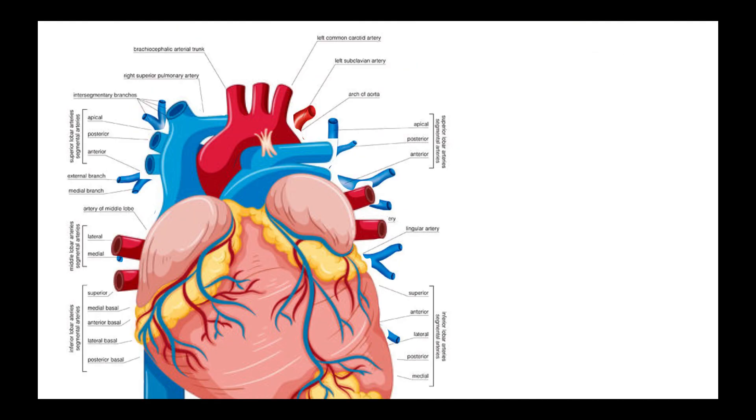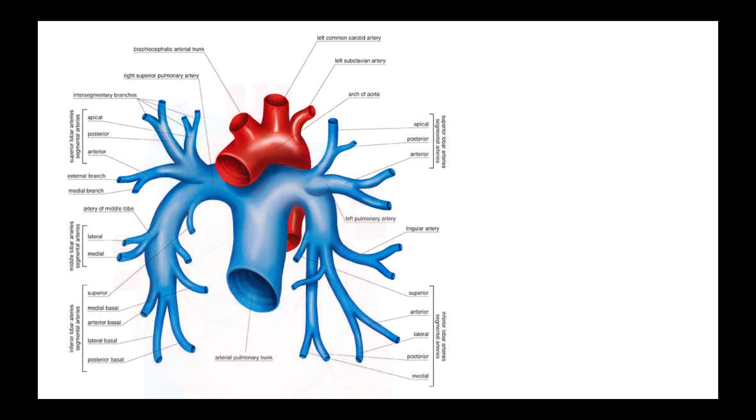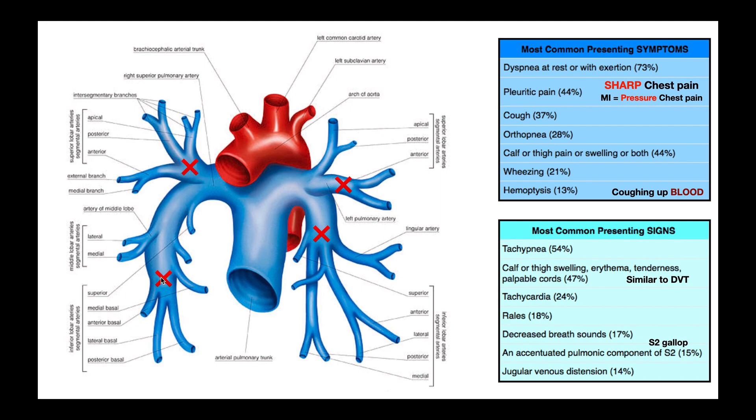It is true that the embolus, if it's large enough, could get stuck at the bifurcation of the pulmonary trunk. That's not very common. What is more common is to get stuck at the bifurcation of the left and the right pulmonary arteries, so basically where these X's are. And so if the pulmonary embolism gets stuck at any of these points, it's going to block blood flow to that part of the lung. That's going to reduce respiratory efficiency, and if it's severe enough, it can lead to death.